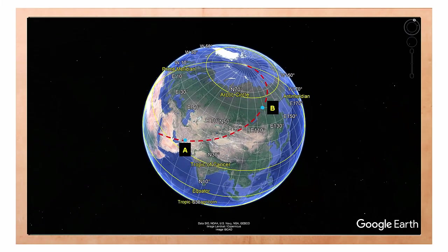Let's look back to our previous example. If you want to fly from A to B maintaining a constant heading, you will fly on a rhumb line track represented by the red dotted line. But if you want to fly the closest distance between A and B, you need to fly on a great circle track represented by the blue line.